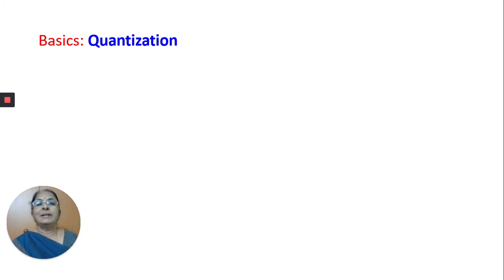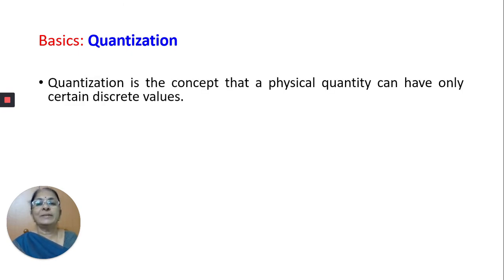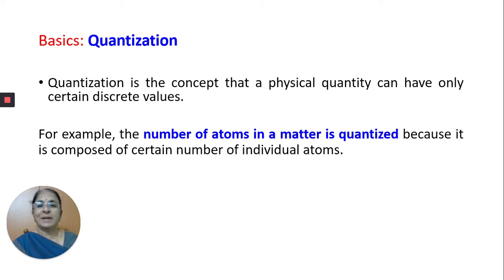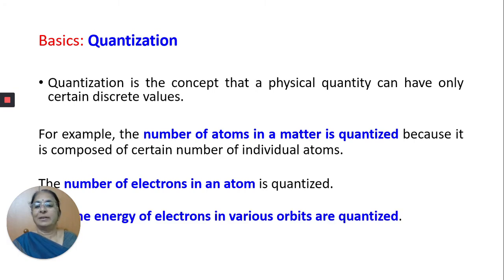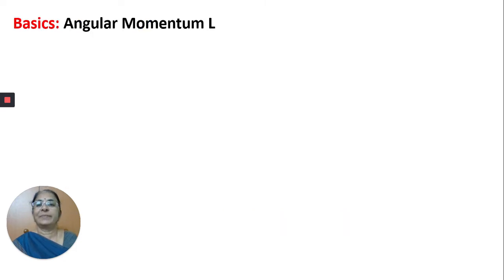Let us learn some basics. What is quantization? Quantization is a concept that a physical quantity can have only discrete values. For example, the number of atoms in matter is quantized because it is composed of a certain number of individual atoms. The number of electrons in an atom is quantized. The energy of an electron in various orbits is also quantized.